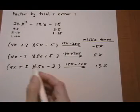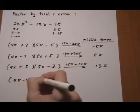Now let's just double check: minus 25x plus 12x is minus 13x. That's it.